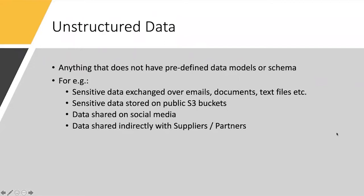Let's talk about what unstructured data is. A very simple definition: if it does not have a predefined data model or schema, for me it's unstructured data. Some examples are sensitive data exchanged over emails, documents, text files — it depends on your function in the organization. If you support a product and deal with a lot of customer questions, you're exchanging a lot of data over emails and documents and it's very difficult to put a structure around it. Sensitive data stored on public S3 buckets is another example — there are many cases on the internet of sensitive data found in public S3 buckets with no correct access controls configured.